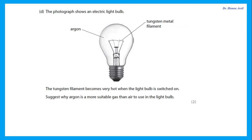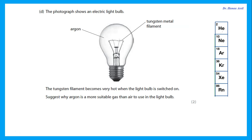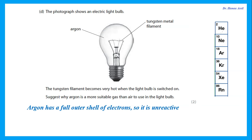The photograph shows an electric light bulb. The tungsten filament becomes very hot when the light bulb is switched on. Argon is more suitable than air to use in the light bulb because there is a tungsten filament inside that I don't want to burn. Argon is in Group 0, so it has a full outer shell — it is unreactive. If we had air or oxygen inside, that would cause the tungsten filament to burn.